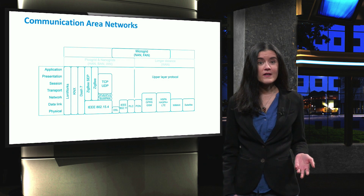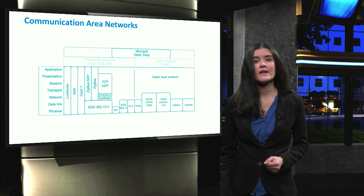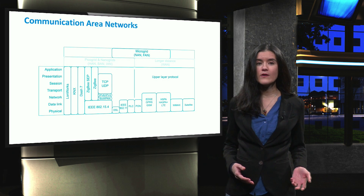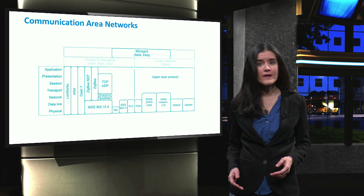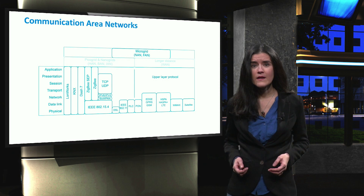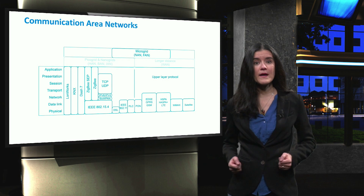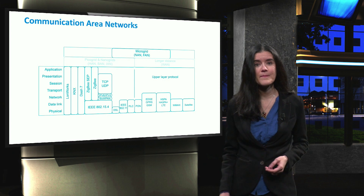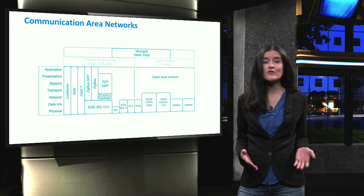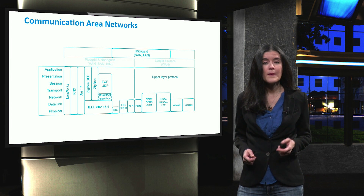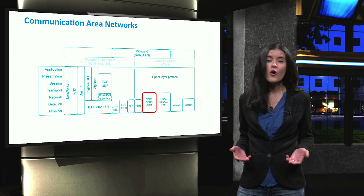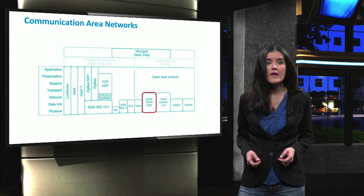Before the consumption and production data of each nanogrid is sent to the distribution system operator, each microgrid has a near-me area network with a central data hub in charge of collecting the data packets and storing them. Nowadays, the communication drivers use Wi-Fi for buildings, PLC, DSL, cellular communications, or fiber.